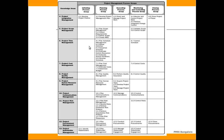For ease of comprehension, in our course we will go Process Group-wise. That means first we talk about Initiation, and under Initiation we talk about Develop Project Charter and then Identify Stakeholders. Then we get into Planning, where we talk about Develop Project Management Plan, Plan Scope Management, Collect Requirements, Define Scope, Create Work Breakdown Structure, and so on.